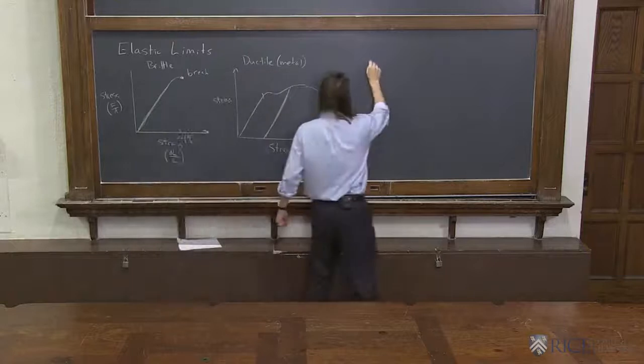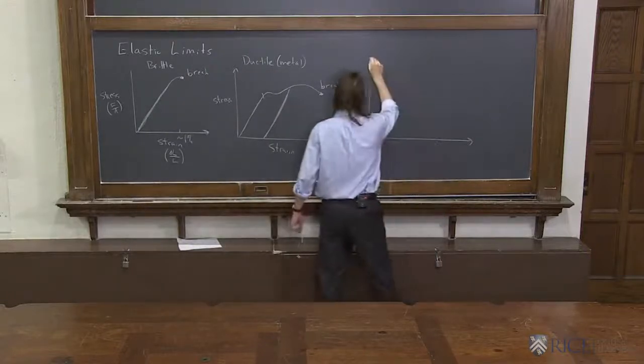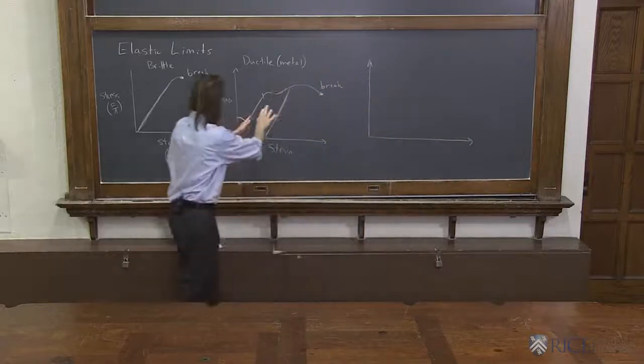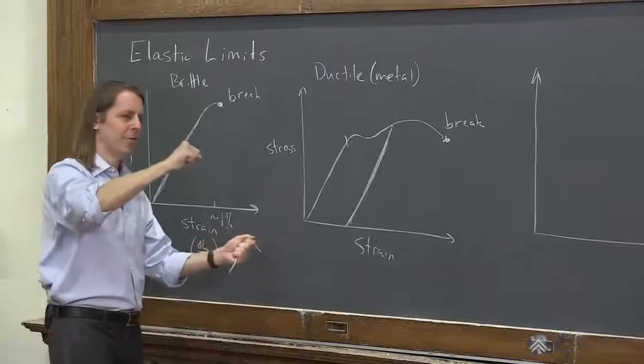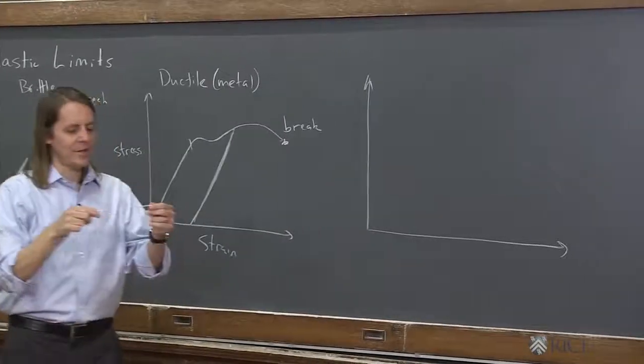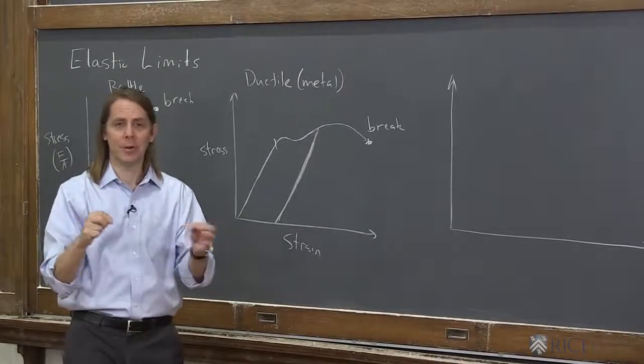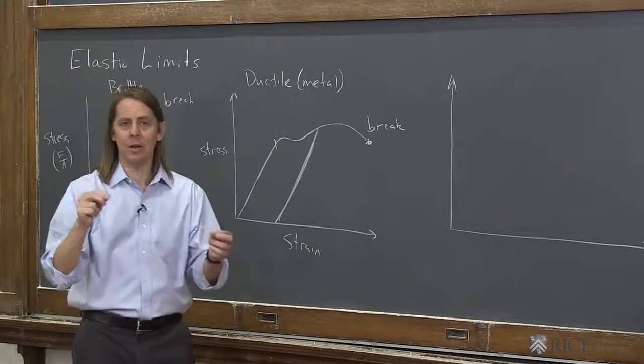So actually, how something deforms depends on sort of what it's made of. So these are sort of polycrystalline materials, the metals, and you're sort of deforming probably the little crystals next to each other. This elastic, this is more long molecules being sort of stretched out and getting the stretch back together. And it actually doesn't make a nice line.